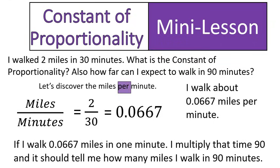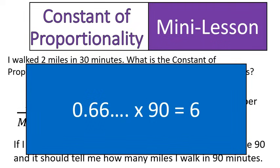So that much in one minute, I'm going to multiply it times 90, and I should get 6. So in 90 minutes, I can expect to walk about 6 miles. It's a little funky and weird, but if we look at funky and weird stuff in our lessons, then you'll be ready for it whenever you see it in real life. In real life, things seldom work out to be nice, even numbers.